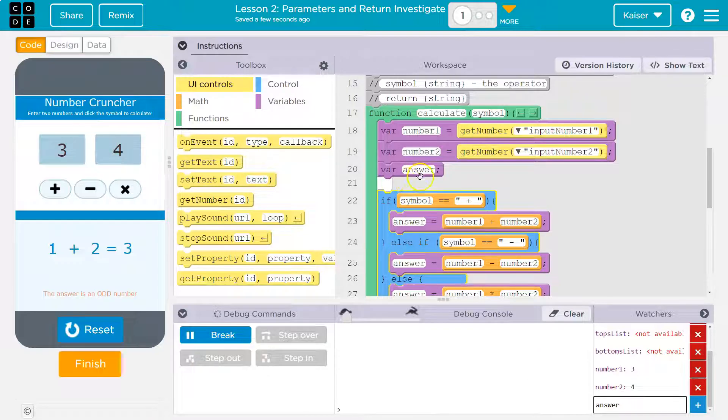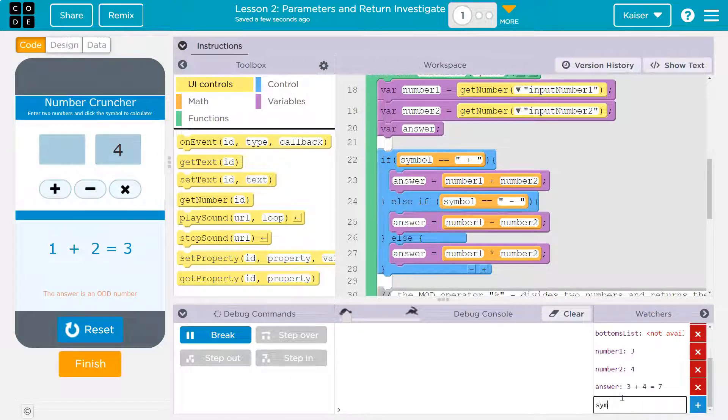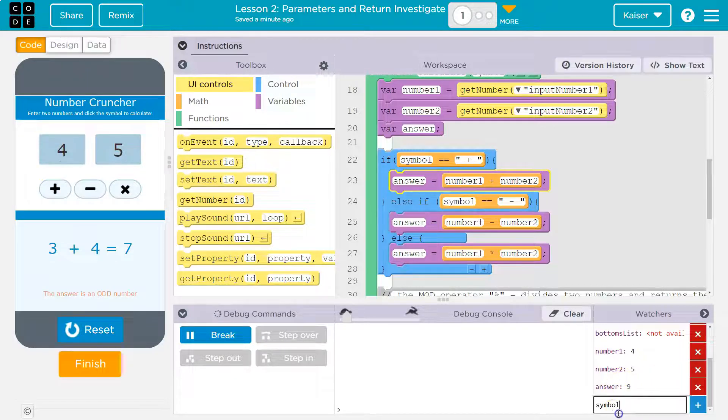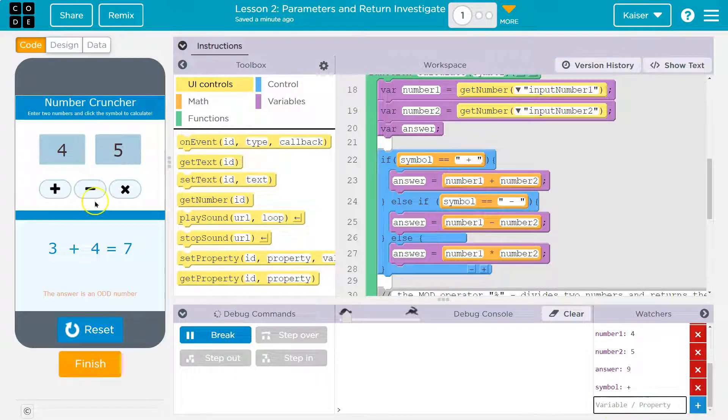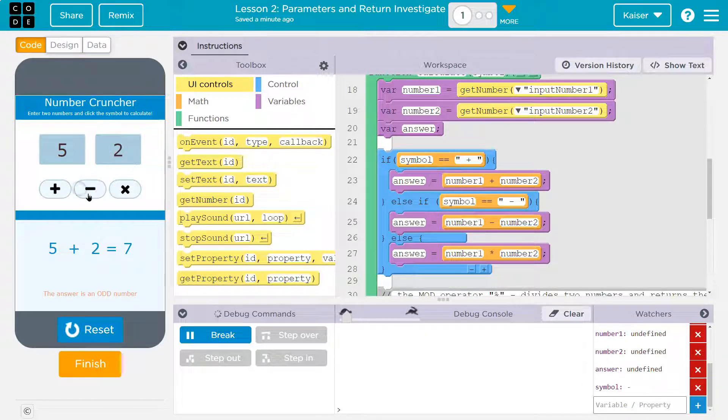Number one, number two. It grabs those variables. Answer is going to be equal to nothing here, but then it checks on our if. What is our symbol? Our symbol is going to be whatever item that gets passed. Four and five here. I'm going to hit plus. Well, when I hit plus, I need to hit enter. What does our symbol become? Plus. What if I hit minus? And you can see it running. That's what the yellow is when it goes through. Let's do five and two. I'm going to hit minus. See the yellow? It's running through. It's grabbing our stuff. Answer is undefined, but symbol.